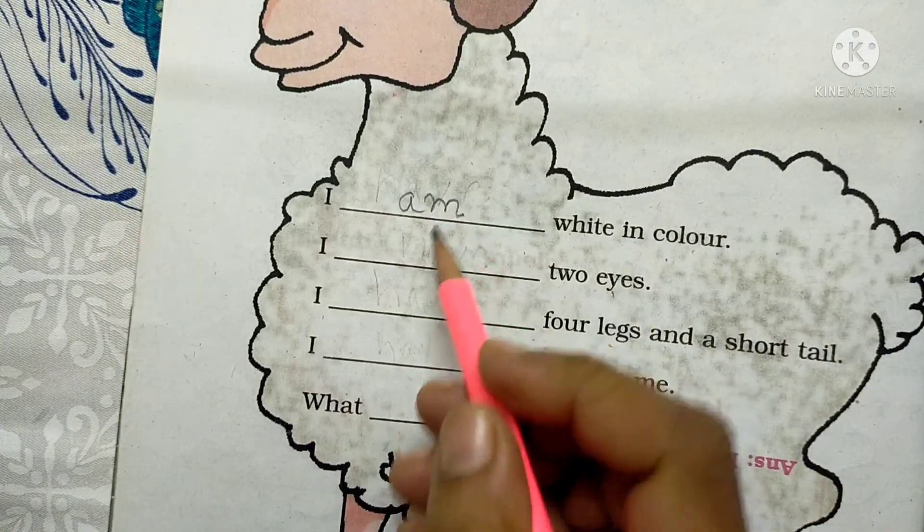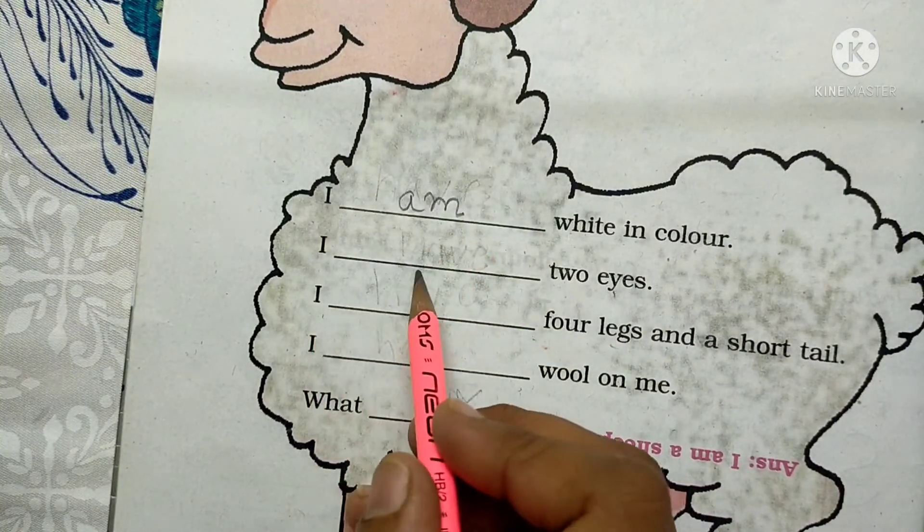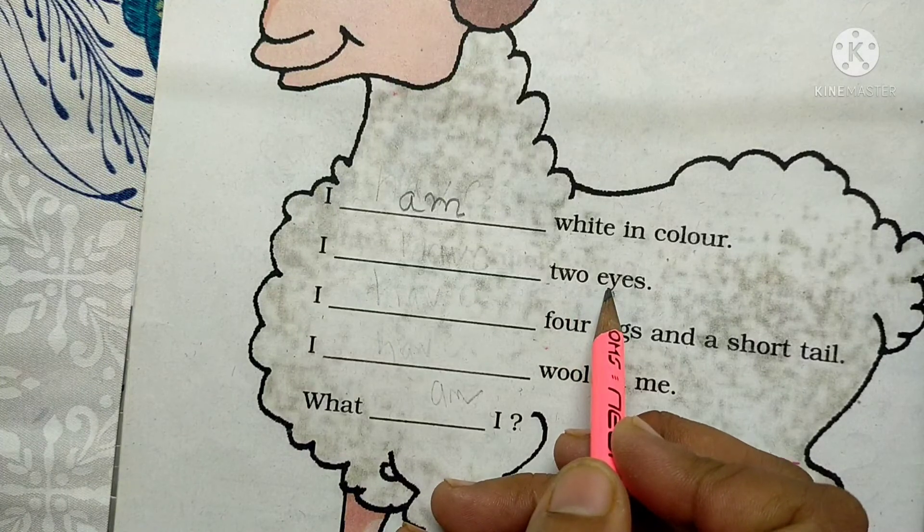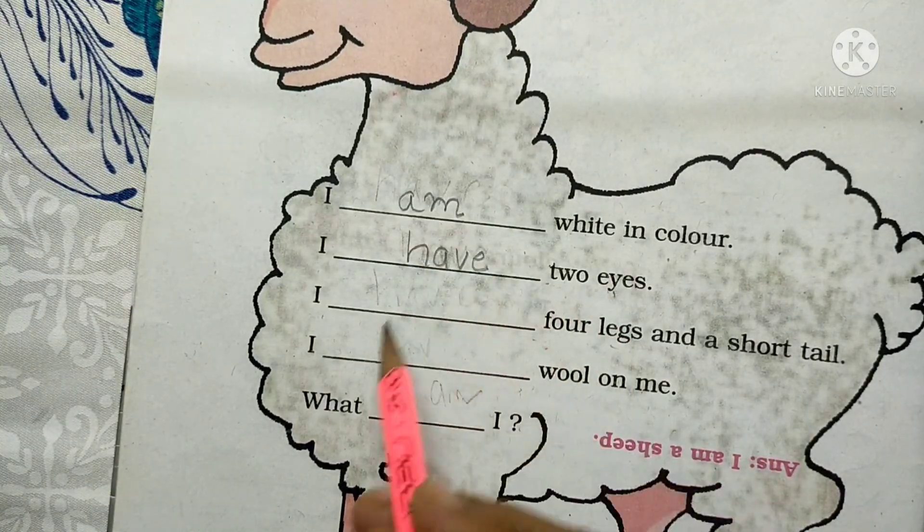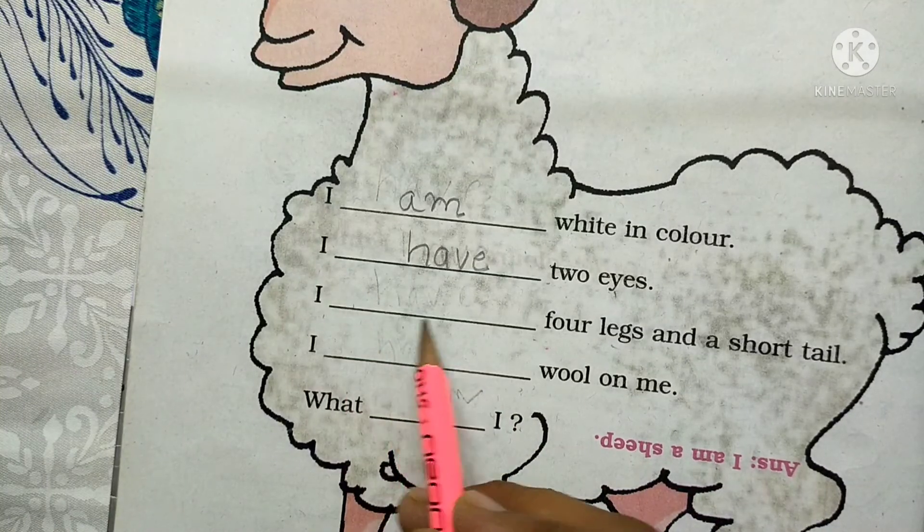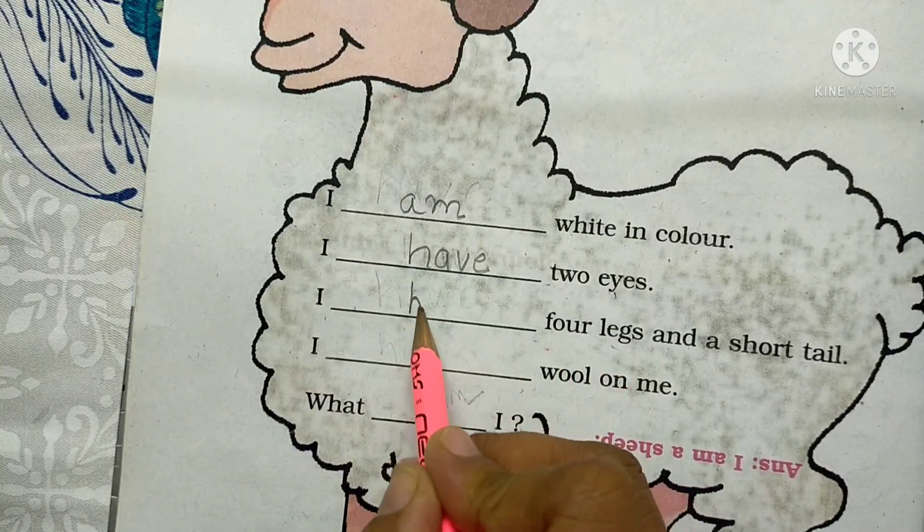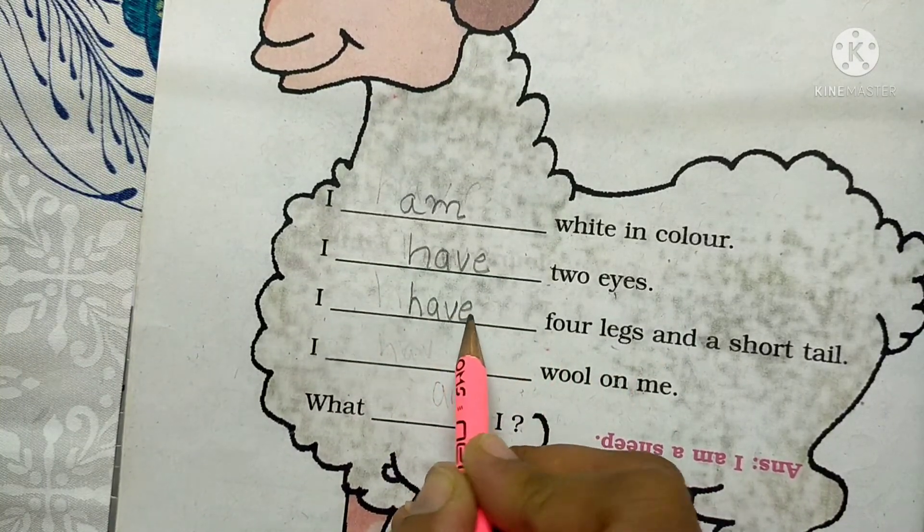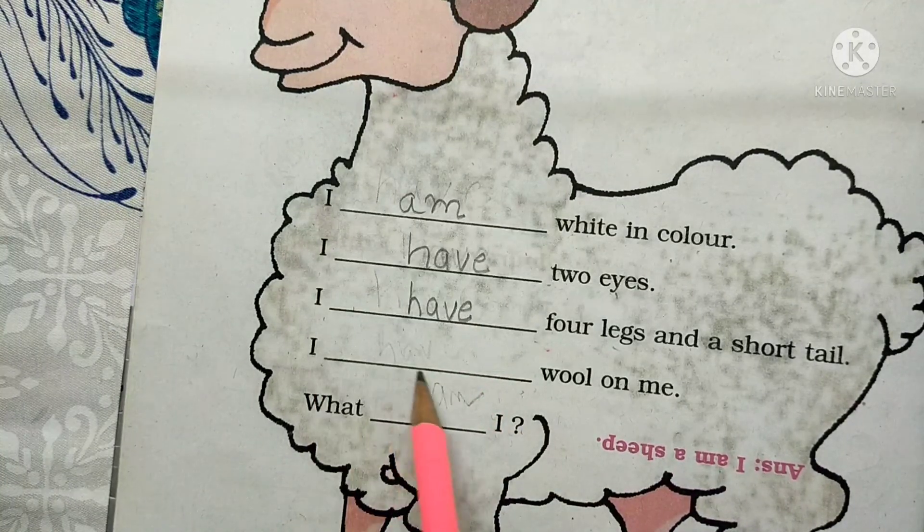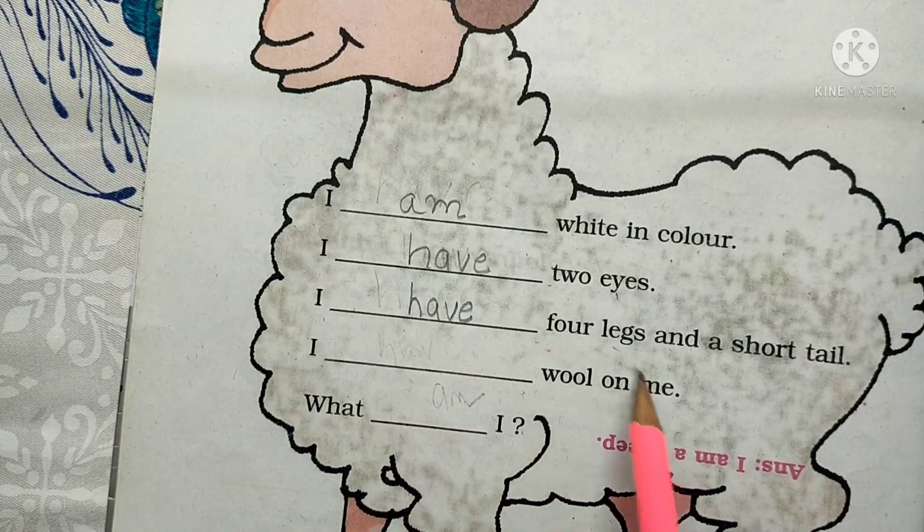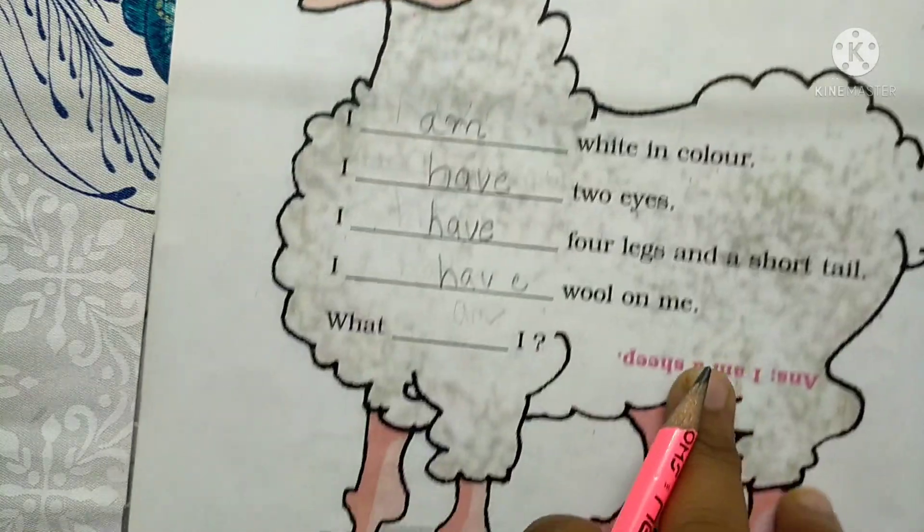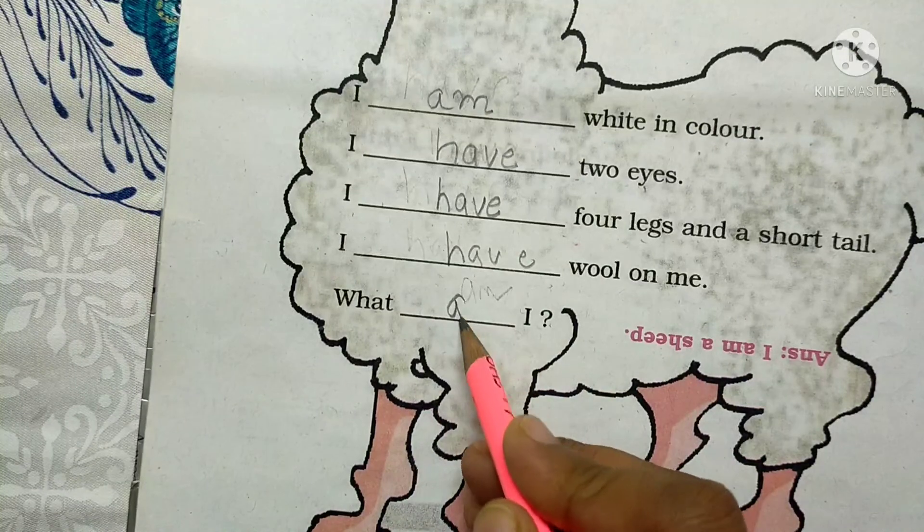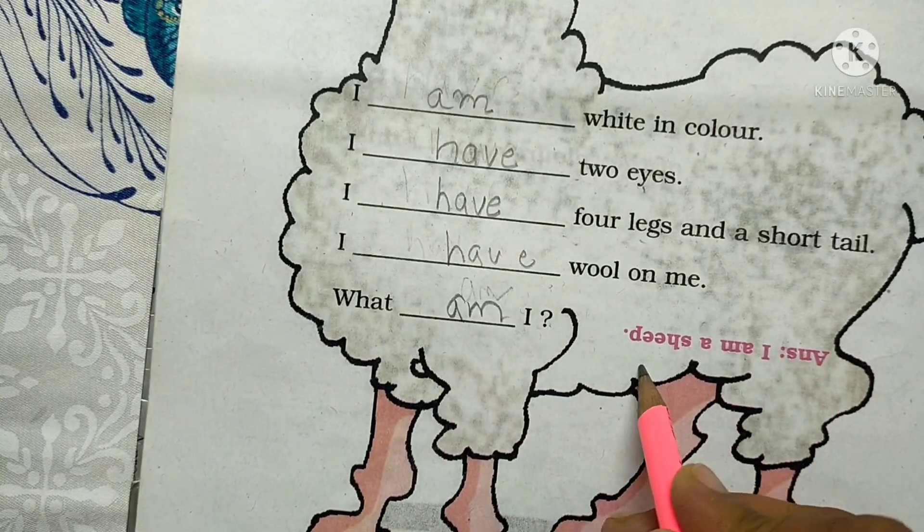What is my color? White. I have two eyes. I have, so what will we write? Have. I have two eyes. Same way, I have four legs and a short tail. I have wool on me. I have. Then who am I? So I am a sheep.